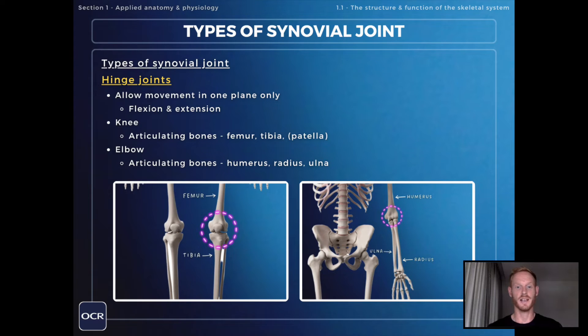The articulating bones at the knee are the femur and the tibia, and at the elbow the humerus, radius, and ulna.